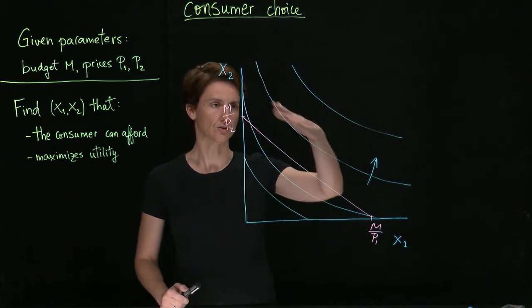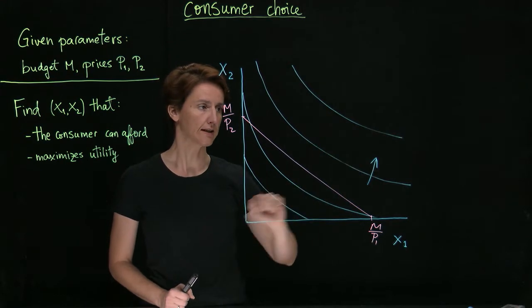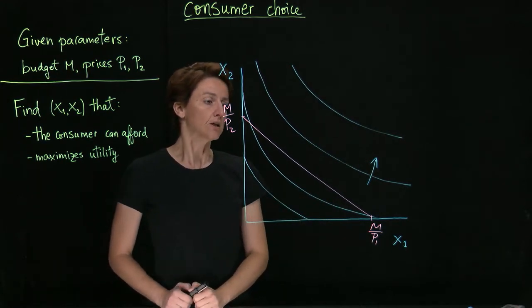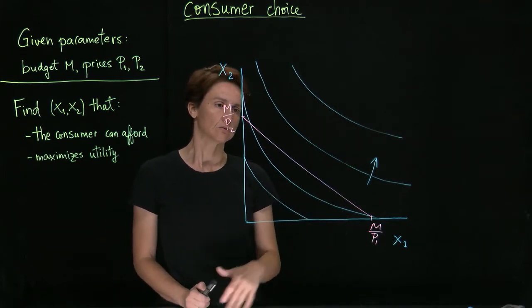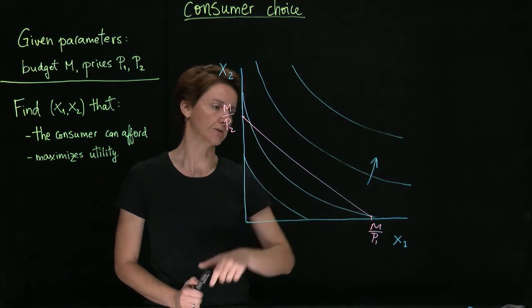Each of these lines indicates points of equal satisfaction, equal utility, and we also know that utility increases in that direction. So, as it is now, we can see that this budget line intersects this indifference curve a couple of times.